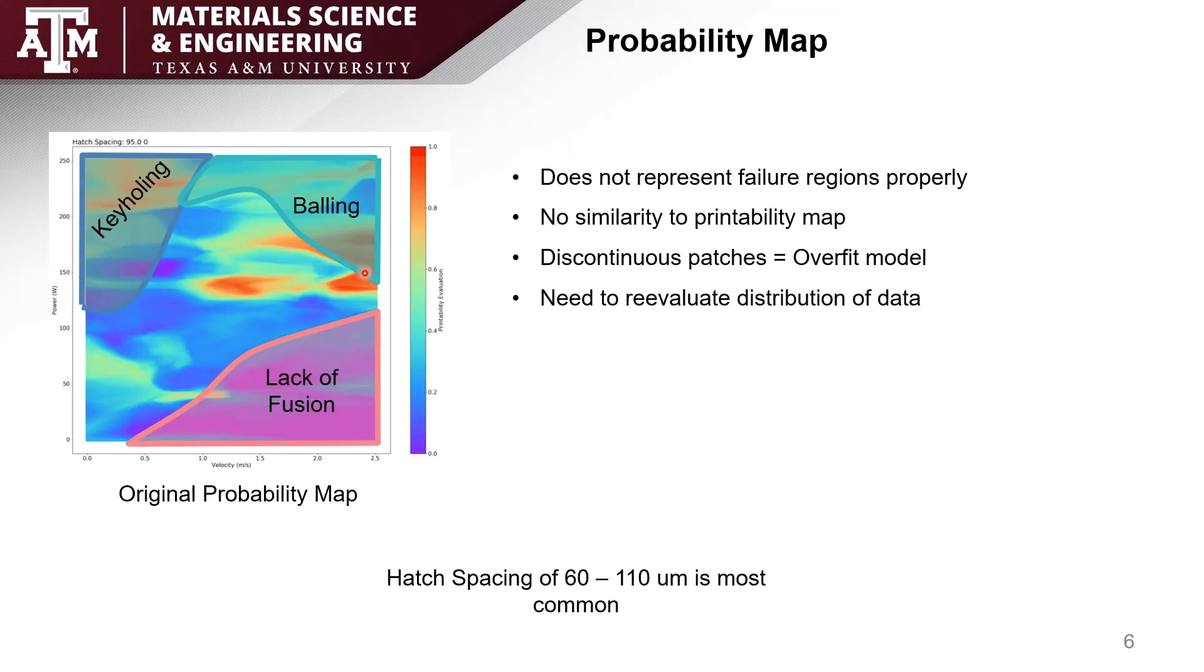You can see that this map does not necessarily represent the failure regions correctly. Keyholing and balling both have very distinct red and green regions, while lack of fusion does have a good blue region, but you can see that the patches that we have here in red and green are very discontinuous.